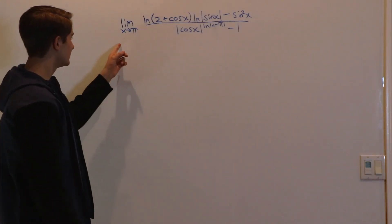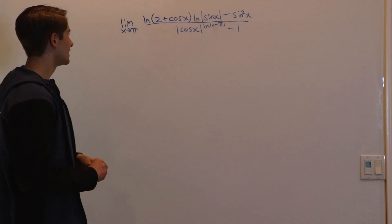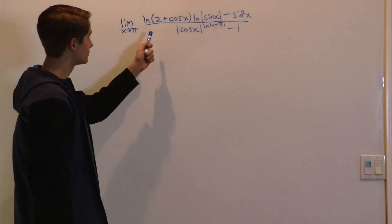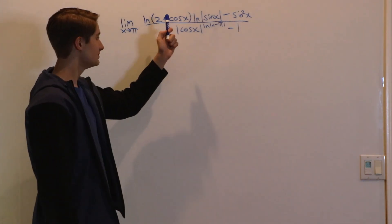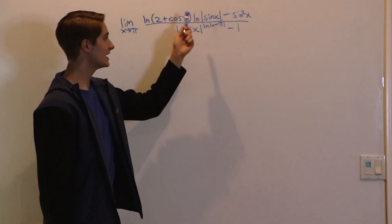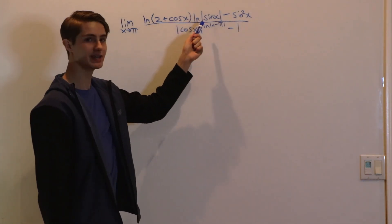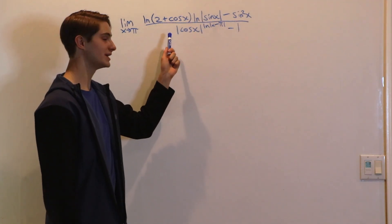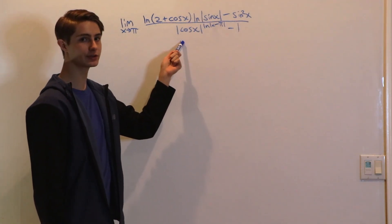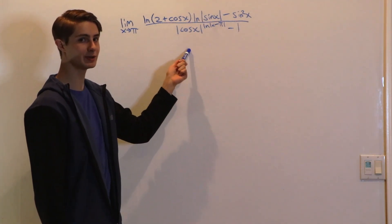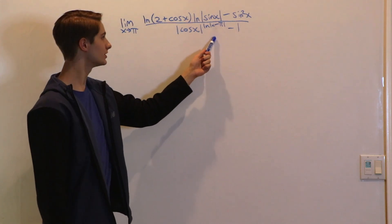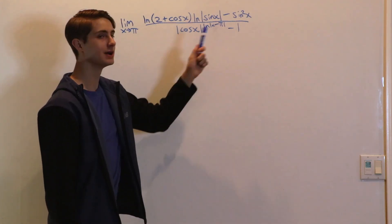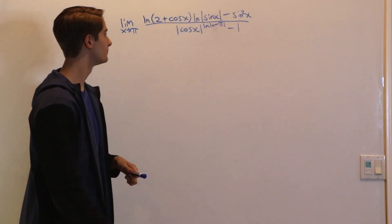We are going to find the limit as x approaches π of the natural log of (2 + cos x) times the natural log of |sin x| minus sin²x, all divided by |cos x| to the power of the natural log of |x - π| minus 1.